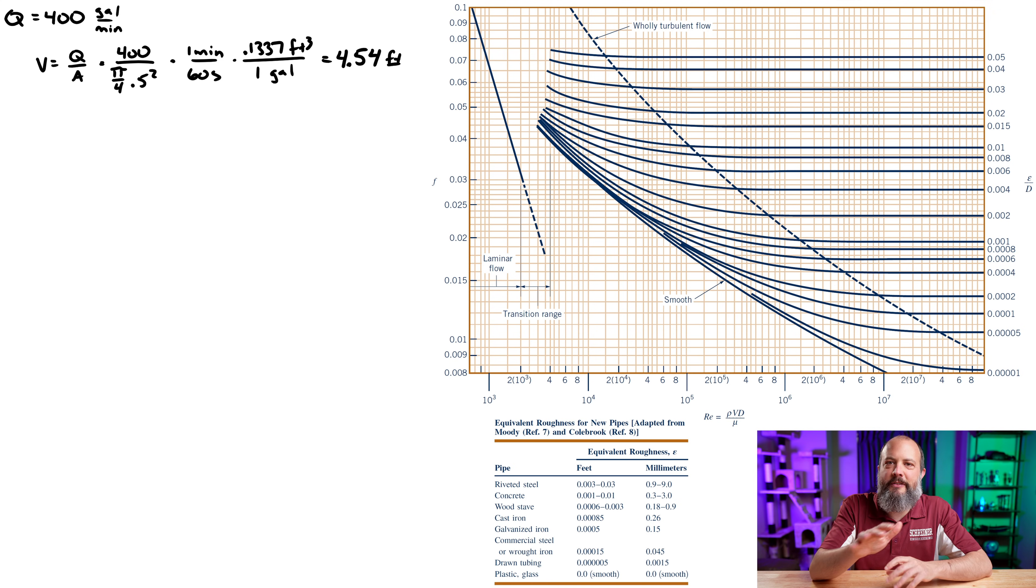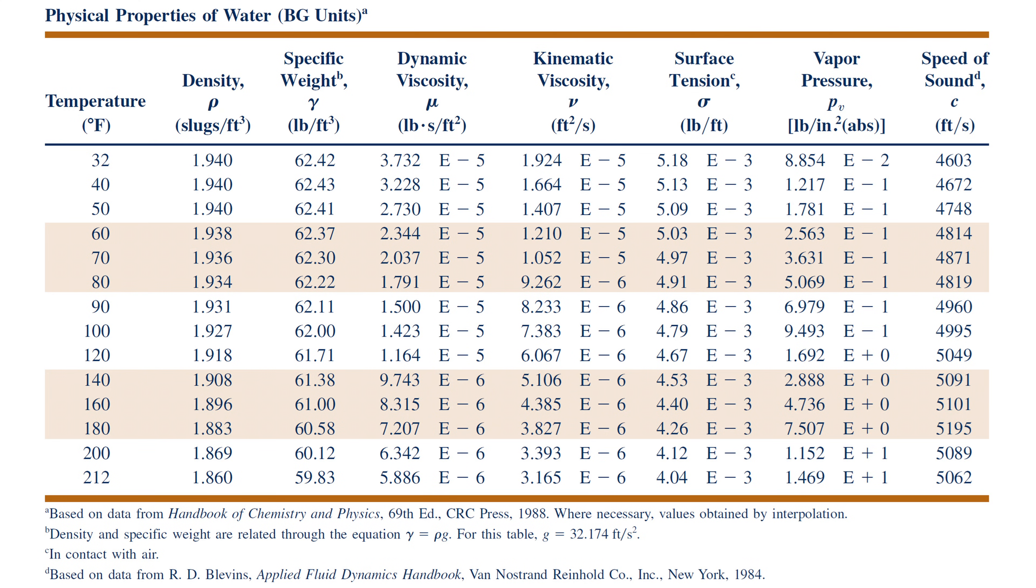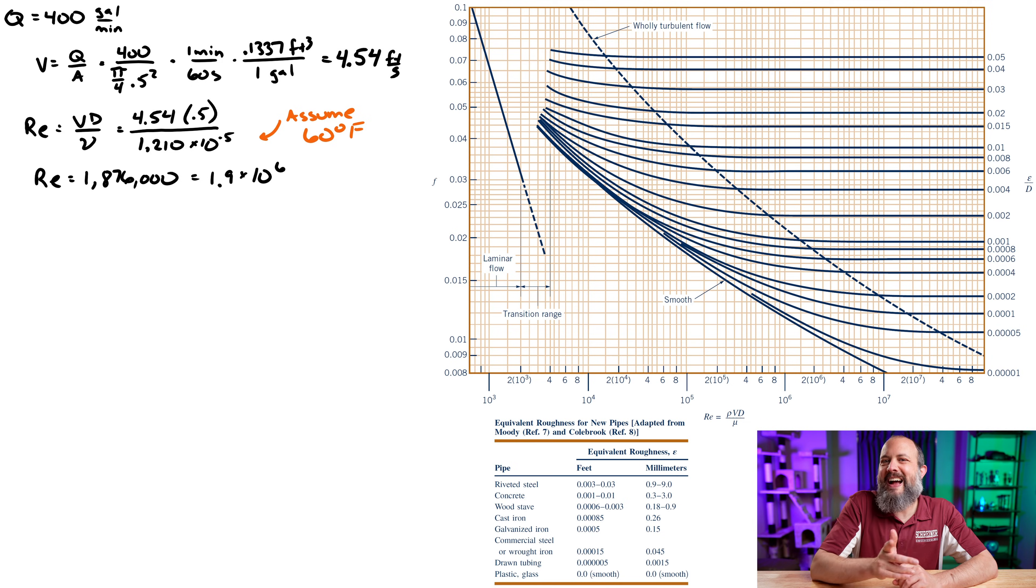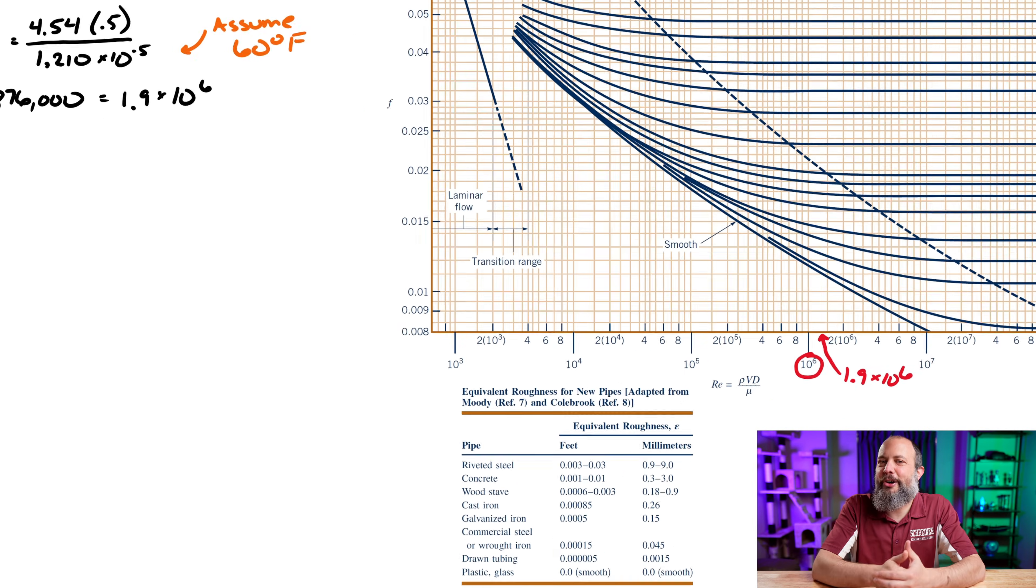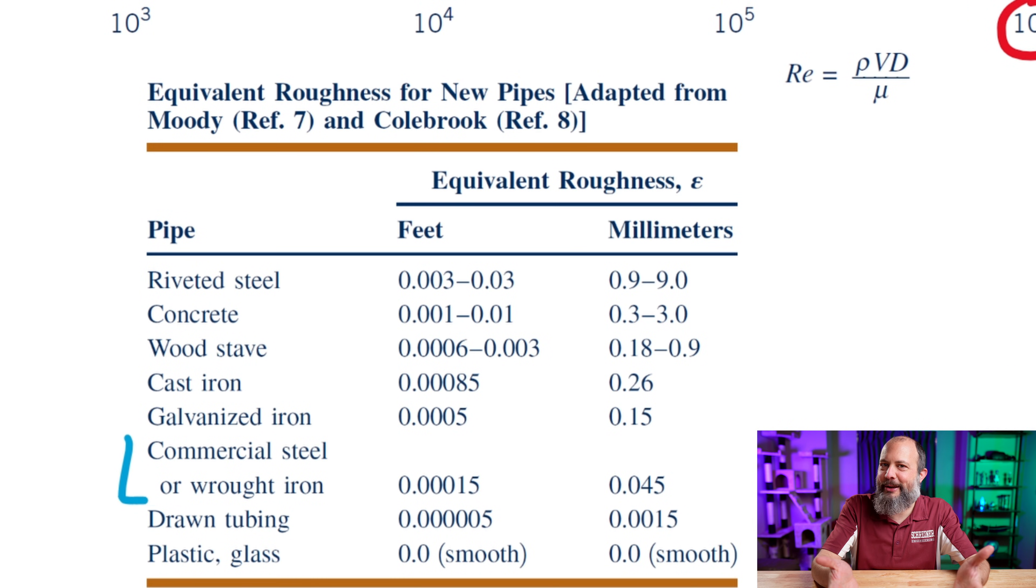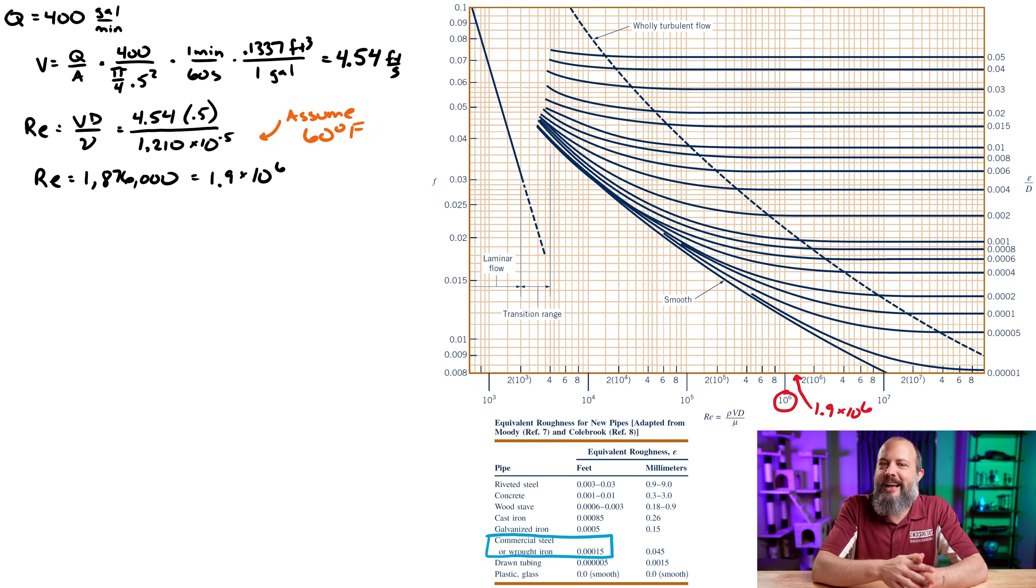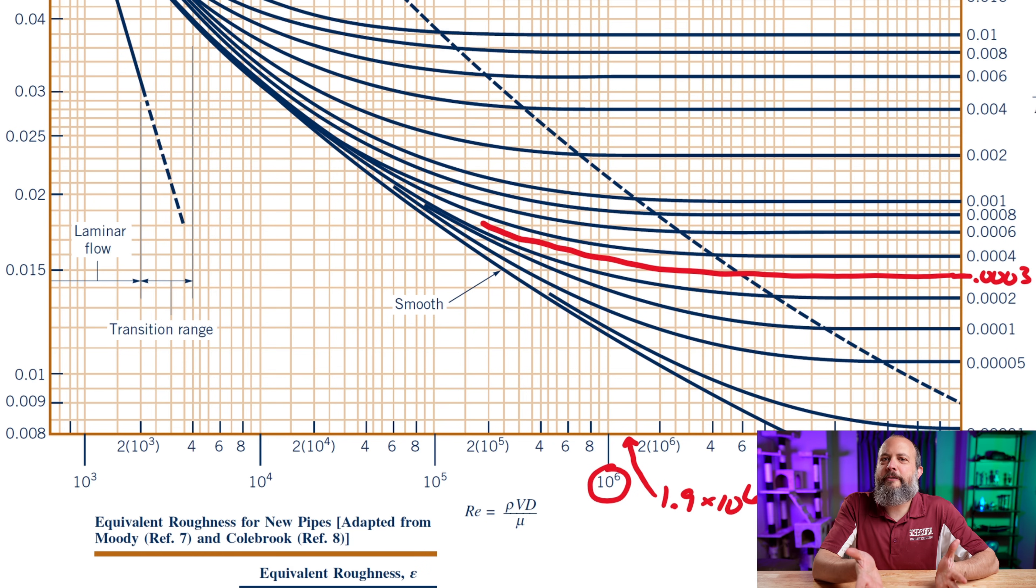400 gallons per minute, V is Q divided by A. You get a velocity of about 4.5 feet per second. Wasn't given temperature for this problem. So if I assume a standard temperature of 60 degrees Fahrenheit, I can look up viscosity. Gives me a Reynolds number of 1.9 times 10 to the 6. Also wasn't given information about what the pipe was made out of, but let's suppose we knew that it was commercial steel. I can grab the equivalent roughness factor from a table and get 0.0003 for the value on the roughness coefficient over on the right hand side of the table. So if I match up these lines, it looks like a friction value of around 0.0152.